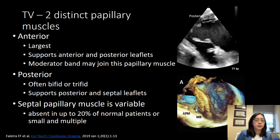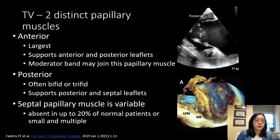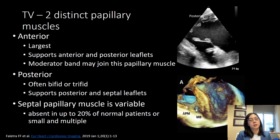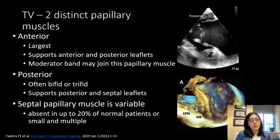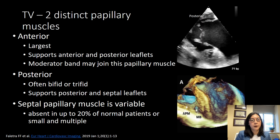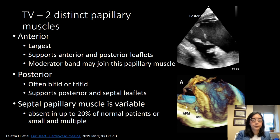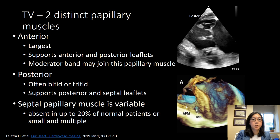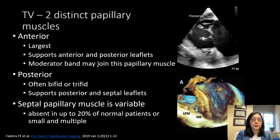The tricuspid valve has two distinct papillary muscles. The anterior tends to be the largest and supports both the anterior and posterior leaflets. There may be a moderator band that joins this papillary muscle. The posterior papillary muscle is often bifid or trifid, and it supports the posterior and septal leaflets. The septal papillary muscle is variable in most patients; it may be absent in up to 20% of normal individuals, or it may be present but small and multiple. The top right image is a transgastric view of the tricuspid valve showing the posterior leaflet, which is bifid, and the single anterior papillary muscle. The 3D image on the bottom is a transesophageal mid-esophageal view showing a moderator band connecting to the anterior papillary muscle.